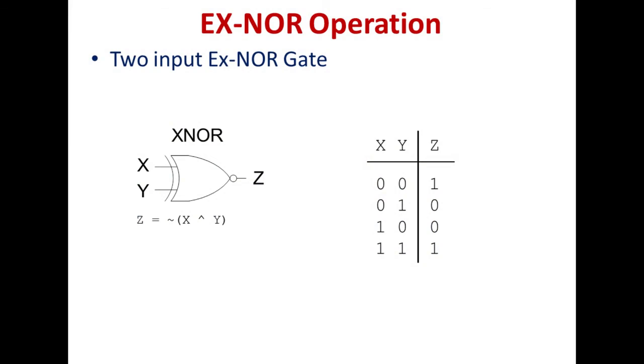Now we will see the expression for XNOR gate. The figure shows the symbol of the two-input XNOR gate. The two inputs are A and B and the output is Y. The output of an XNOR gate is 0 if one of the inputs is 1. The expression for XNOR gate is Y = A ⊕ B (whole bar). From the truth table: inputs 0, 0 give output 1; inputs 0, 1 give output 0; inputs 1, 0 give output 0; and if both inputs are 1, the output is 1. This is about the operations of gates.